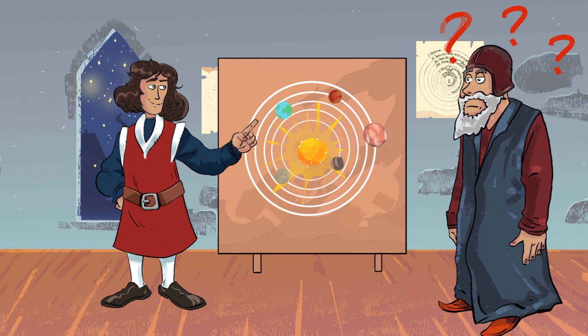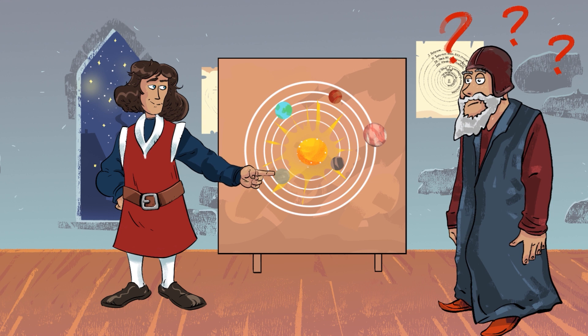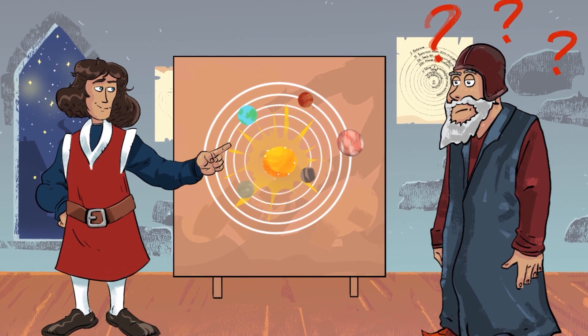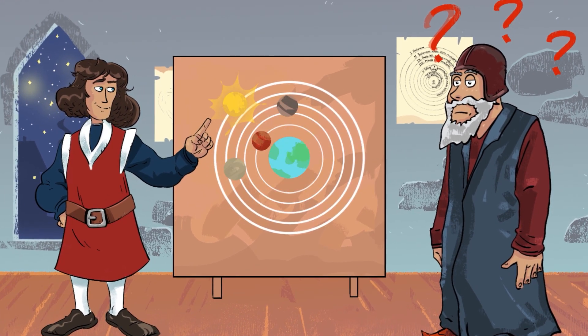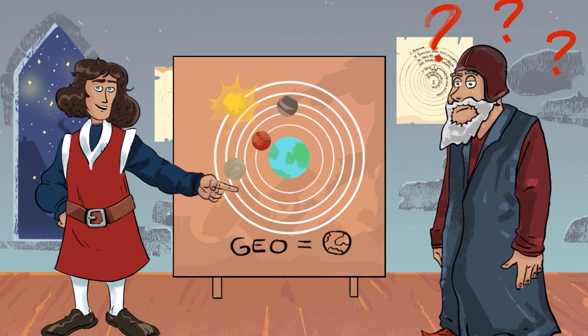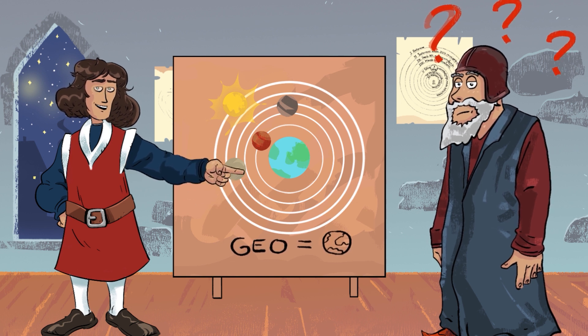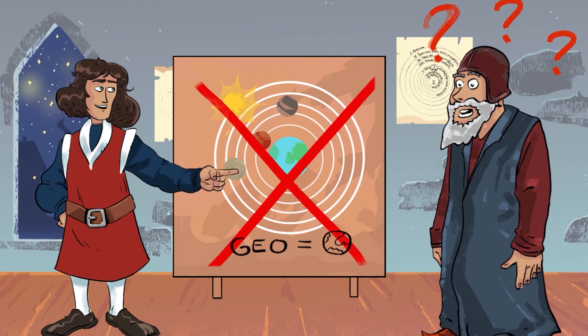As a result of his observations on the universe, Copernicus believed that the geocentric theory is wrong. The Greek word geo means Earth. And at that time, the Earth was believed to be the center of the universe.